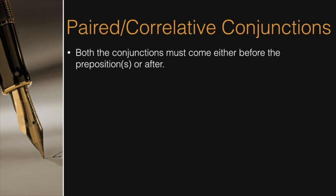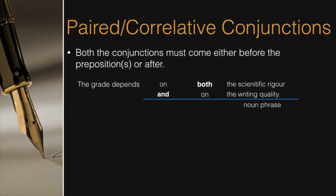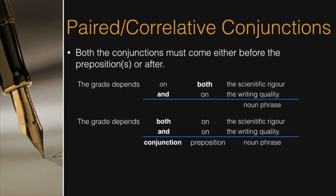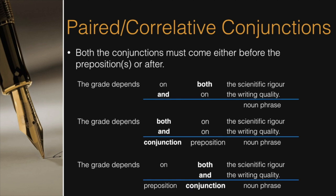Another rule of thumb with the paired conjunctions is that both the conjunctions should come either before or after the prepositions. Now examine this sentence. The grade depends on both the scientific rigor and on the writing quality. Here the problem is that the conjunctions exist both before and after the prepositions. This is not correct. So let's revise. The grade depends both on the scientific rigor and on the writing quality. Now the conjunctions are on the same side of the prepositions. But if we wish to avoid repeating the prepositions on, we can do that as well. The grade depends on both the scientific rigor and the writing quality.